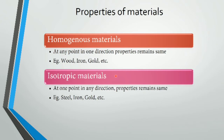Isotropic materials: if we consider one point, that point has similar properties in all directions. Examples are steel, iron, gold, etc. For homogeneous materials all points are considered, while for isotropic materials one point is considered and that point has similar properties.